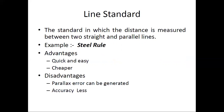This is exactly the topic mentioned in your syllabus: line standard, end standard, and wavelength standard. A line standard is one in which the distance is measured between two straight and parallel lines. An example is the steel rule, which you already use for measurement of straight length. Advantages: quick, easy, and cheaper. Disadvantages: parallax error can be generated and accuracy is less.